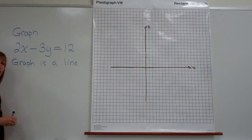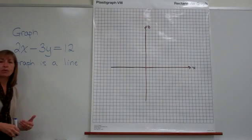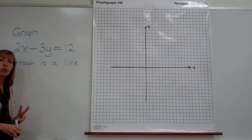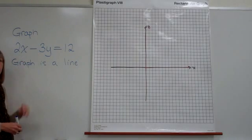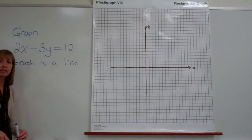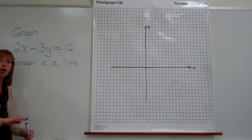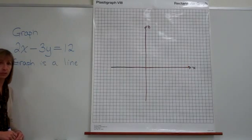And that's very helpful to know because once we know that the graph is a line, I just know that I need to generate two ordered pairs that make this equation true and then graph them. And since two points determine a line, I can then use a straight edge to connect those two dots that I've graphed and that will give me the graph of all the ordered pairs that make that equation true.